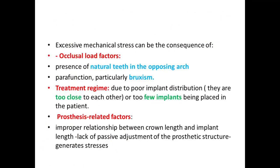Conditions causing excessive mechanical stress include: opposing a natural tooth against an implant causing excessive occlusal force; parafunctions like bruxism; poor implant force distribution from placing too few implants; and prosthetic-related factors such as improper crown-to-implant length relationship, leading to lack of passive fit and stress generation in the prosthetic structure.